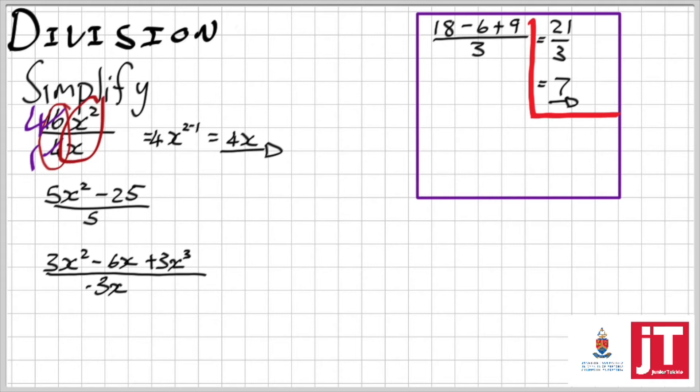That's perfect if you can do that, but what if you can't add the numerator? Well I could simply split it up, so say 18 over 3 minus 6 over 3 plus 9 over 3. Let's see if it works out. 18 divided by 3 is 6, 6 divided by 3 is 2, and 9 divided by 3 is 3. If I add that up it gives me 7, which is the same we got in the red block.